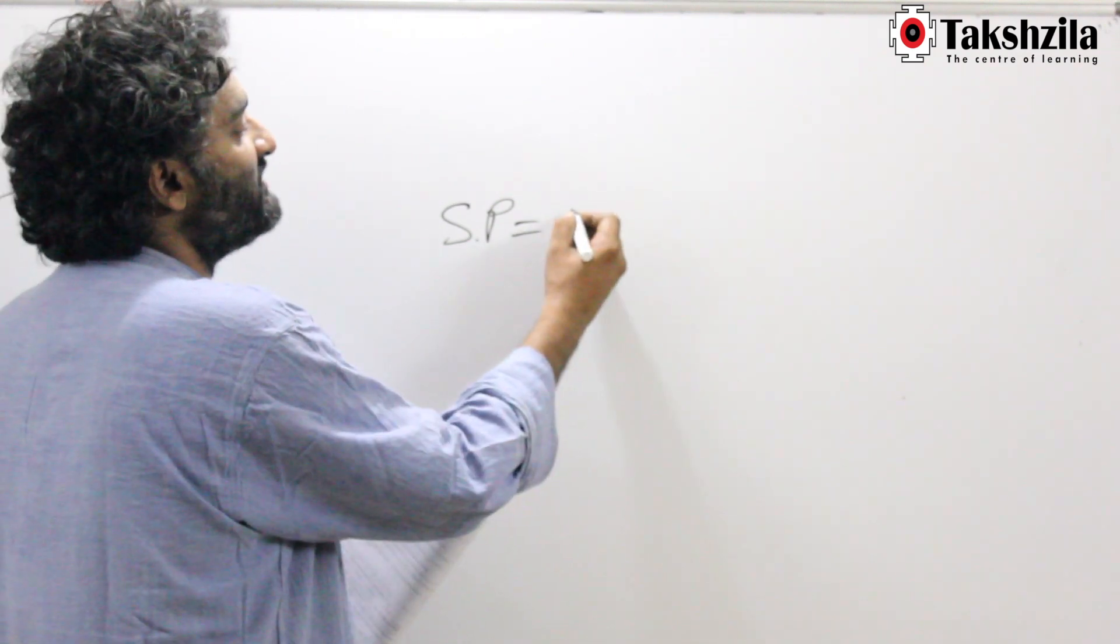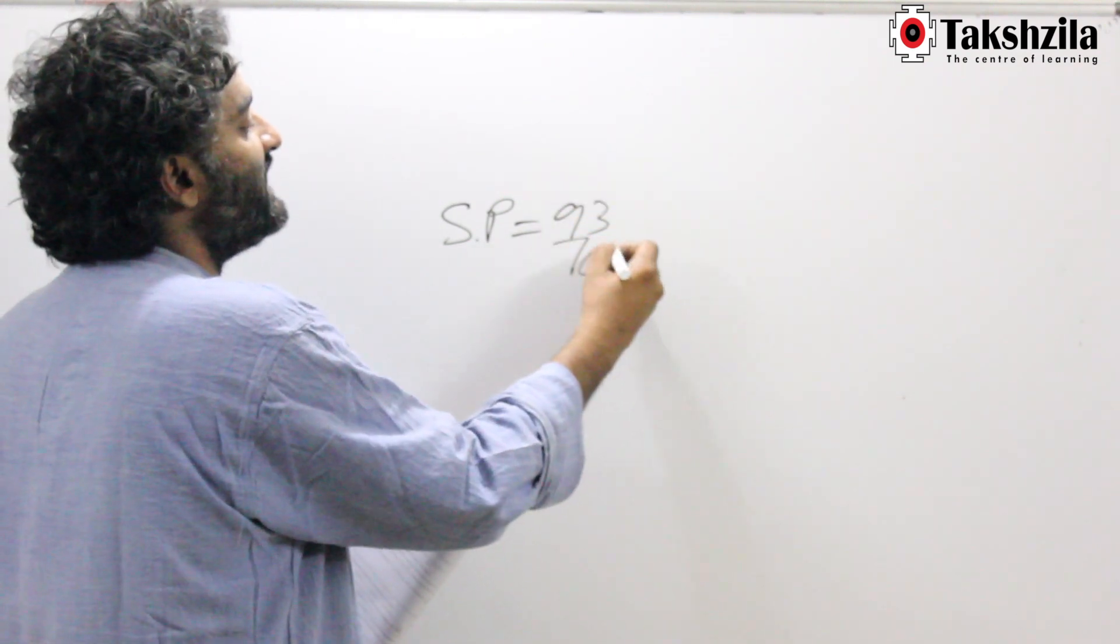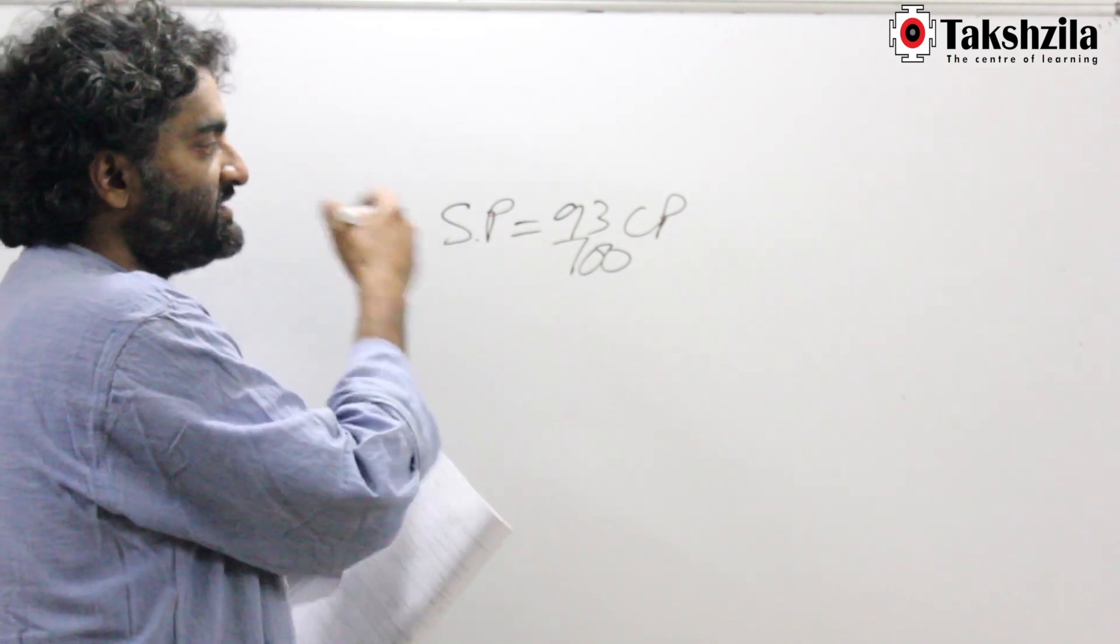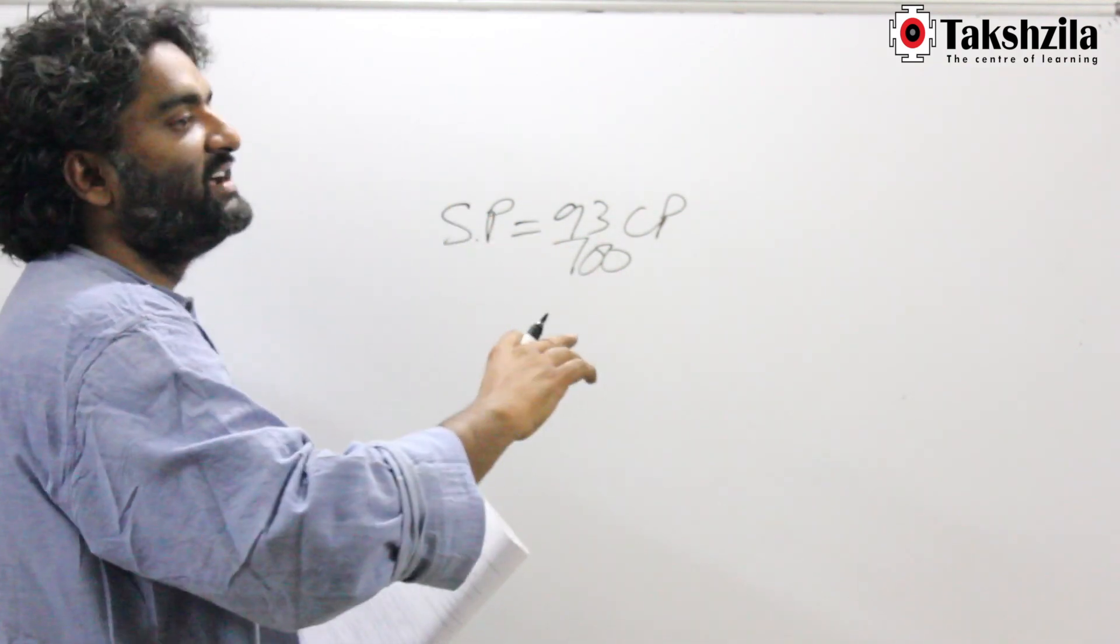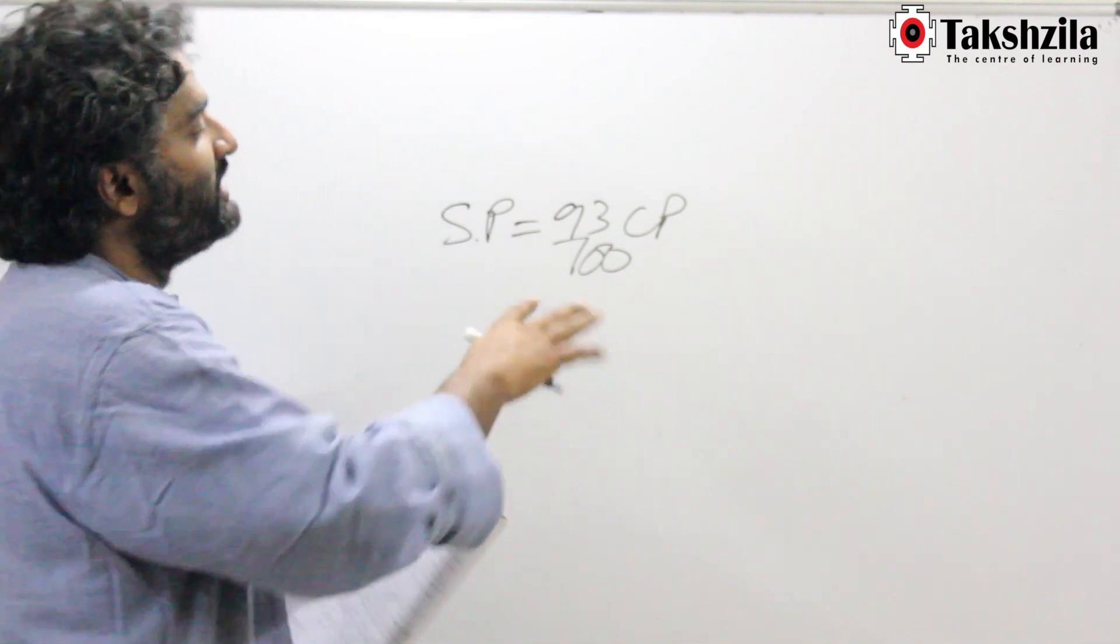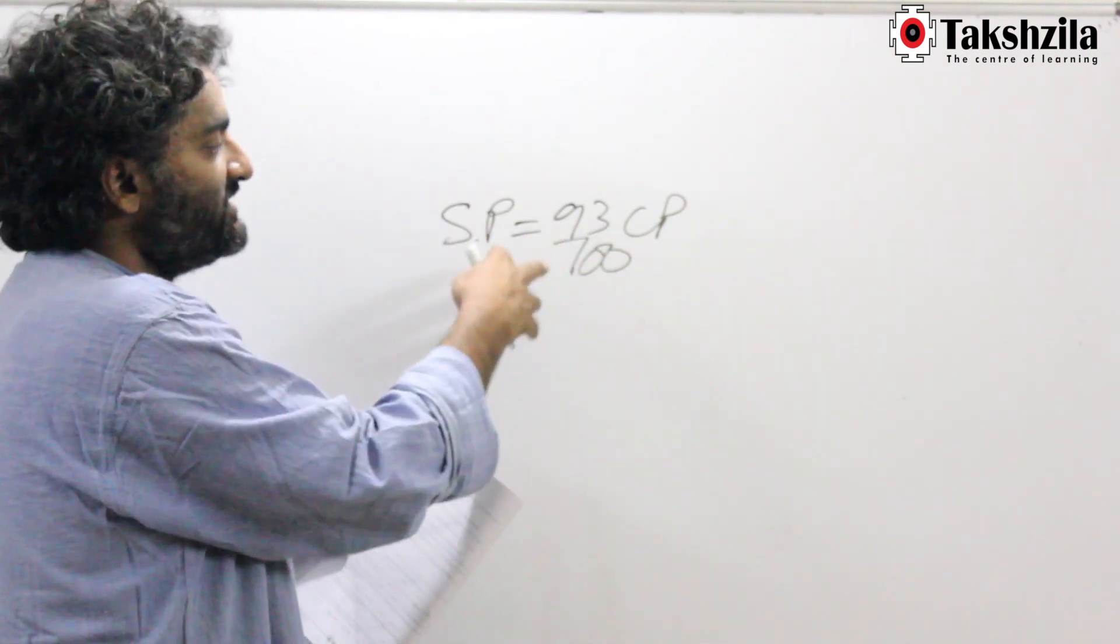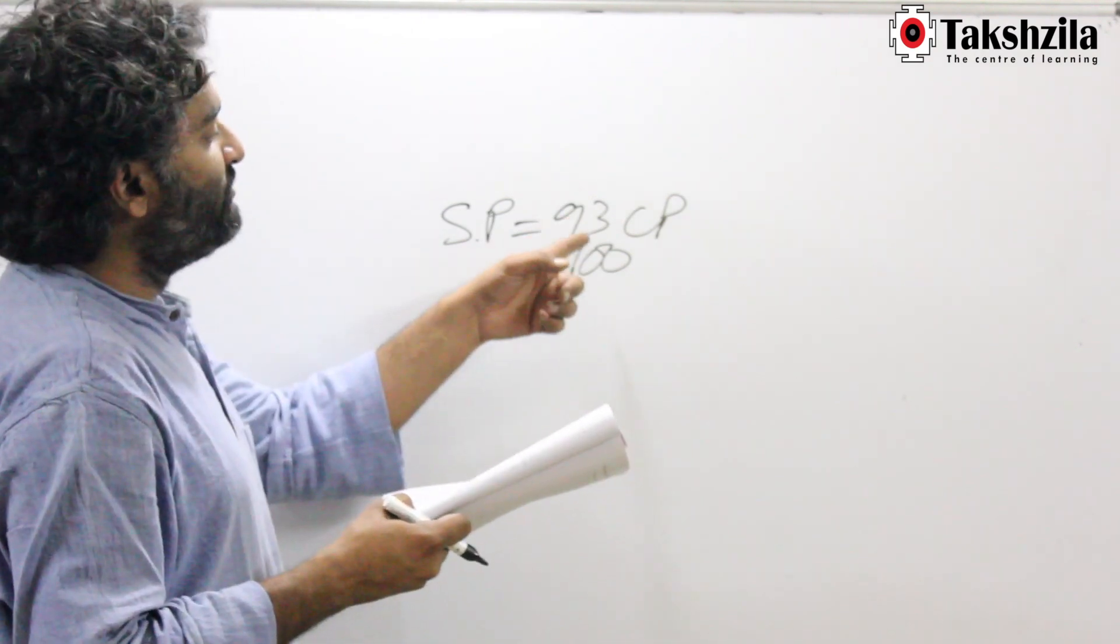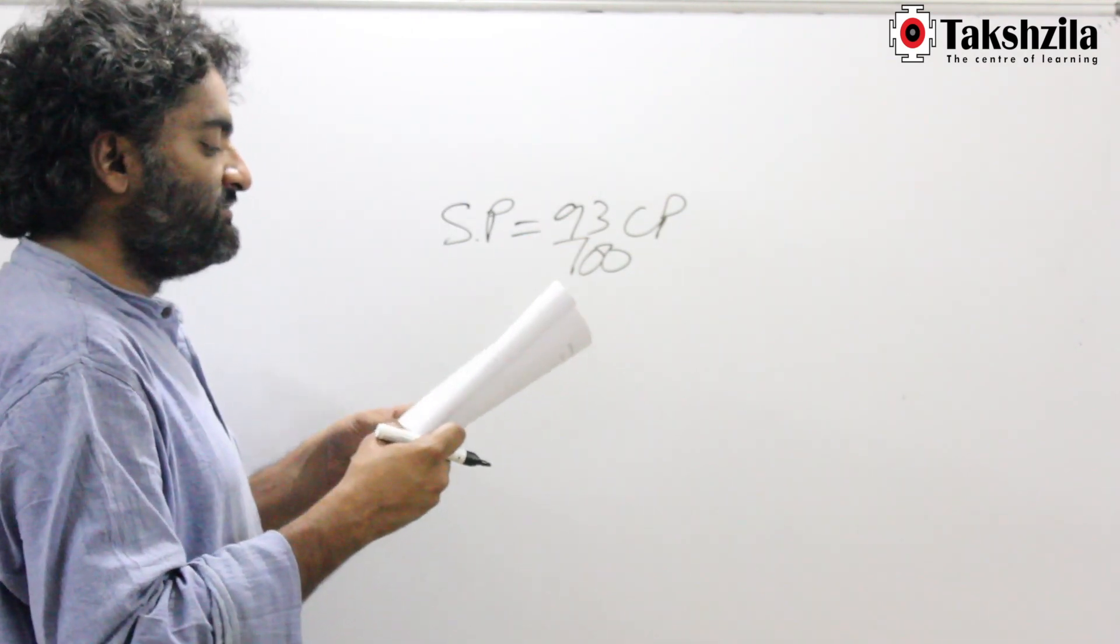Reduce 100 by 7 by 100—the multiplying factor would be 93 by 100 of CP. So we should know how to do this. Life is not always going to be as easy as having 6 by 5 and 5 by 6, so I should be able to convert any percentage into a multiplying factor. You would also get this by the normal formula: 7% minus.